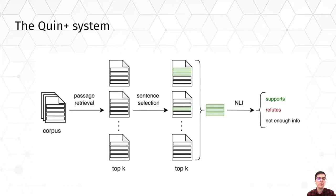If the number of evidence passages that support the claim exceeds the number of passages that refute the claim, we assign the label probably true; otherwise we assign the label probably false.